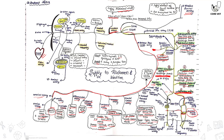The proximal plantar arch communicates through a branch of the dorsal pedal artery. As it descends below the fetlock, a distal plantar arch is also formed, which gives a perforating branch to the dorsal metacarpal artery. The proximal plantar arch receives a perforating branch from the dorsal pedal artery, while the distal plantar arch gives a perforating branch to the dorsal metacarpal artery. These then continue as the digital arteries and the dorsal common digital artery.